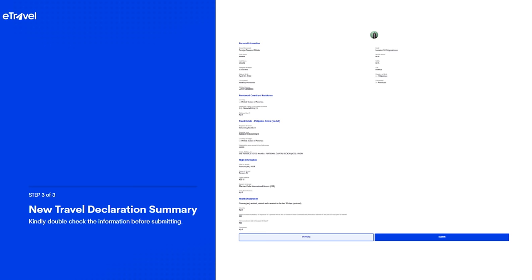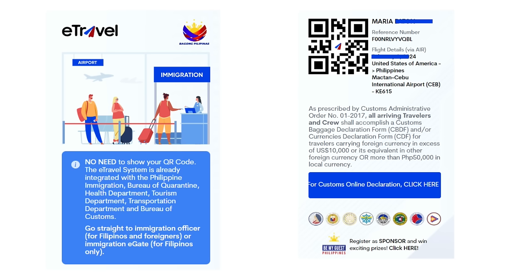Step 3 is the summary — check that everything looks good and all information is correct, then click Submit. When you click Submit, this is the new look of your e-travel QR code. It indicates your name, your reference number, and your flight details. It will even say 'No need to show your QR code' — the e-travel system is already integrated with the Philippine Immigration, Bureau of Quarantine, Health Department, Tourism Department, Transportation Department, and Bureau of Customs.